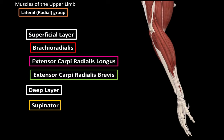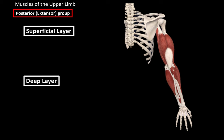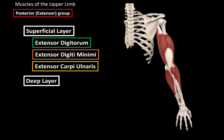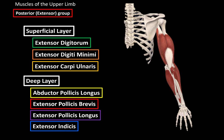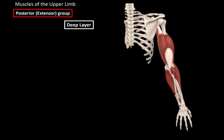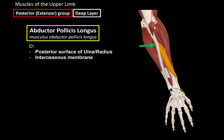That was the lateral muscles of the lower arm. Now looking at the forearm from the posterior perspective to cover the extensor muscles. The extensor muscles are divided into superficial and deep layers. Starting with the deepest muscles — the abductor pollicis longus originates from the posterior surface of the ulna and radius, as well as the interosseous membrane between them, and inserts at the base of the first metacarpal bone. As the name says, it mainly abducts the thumb.